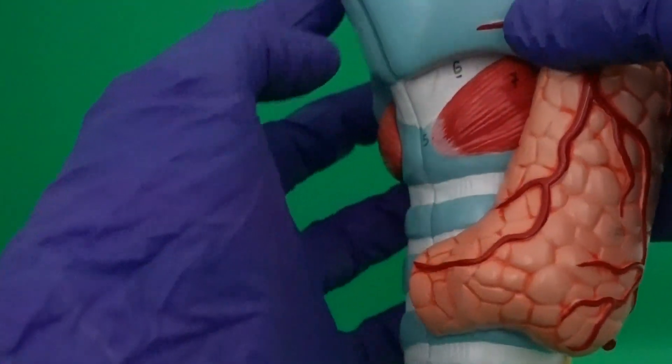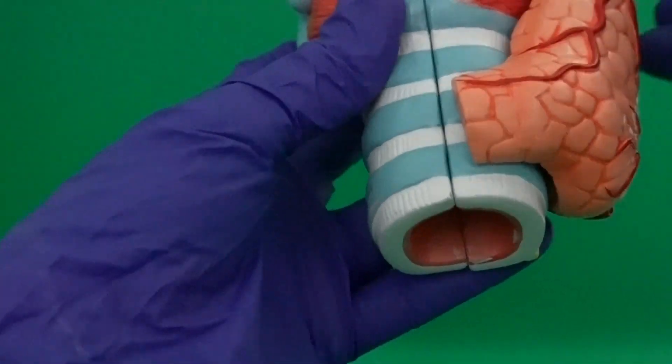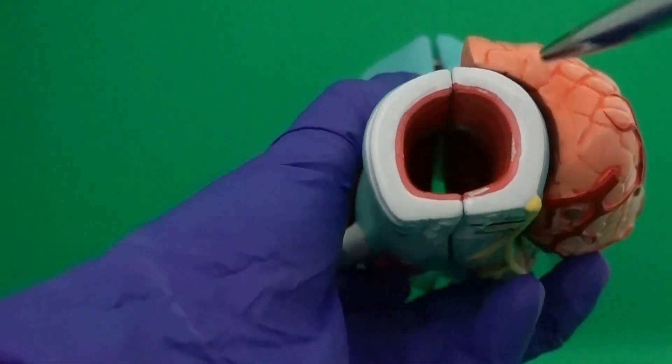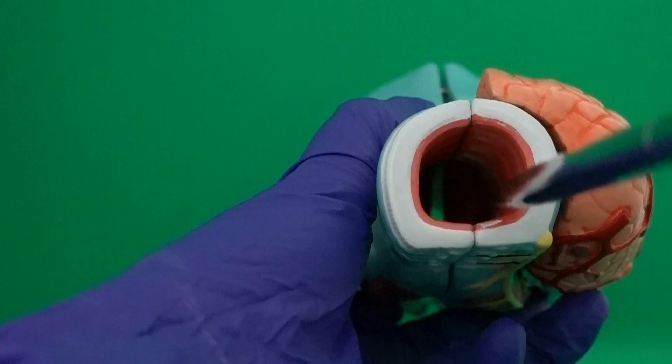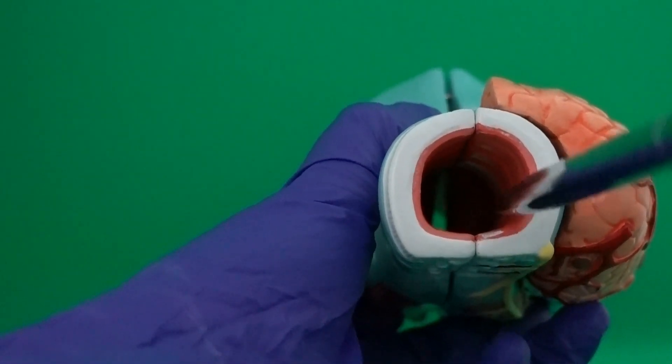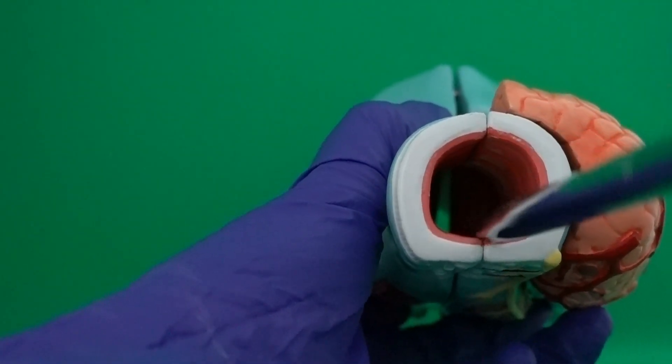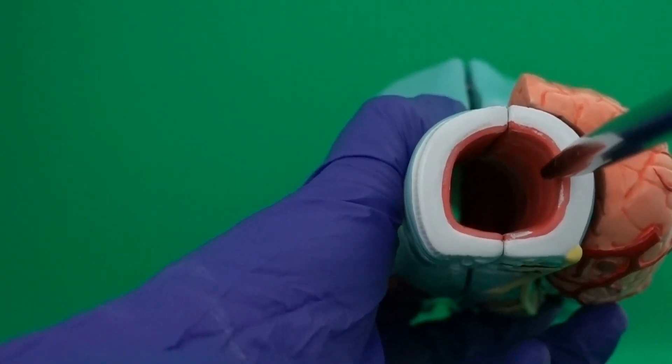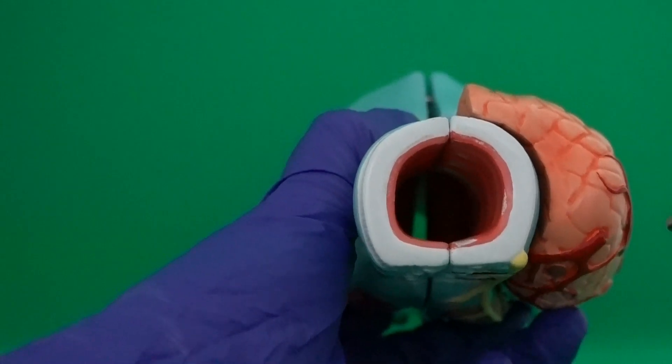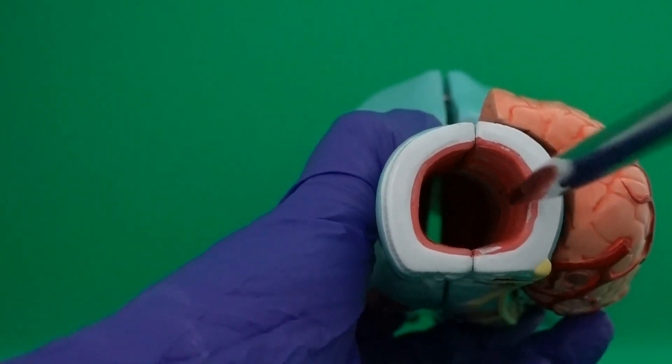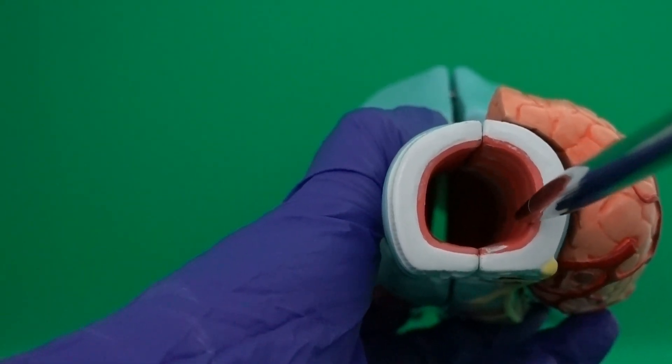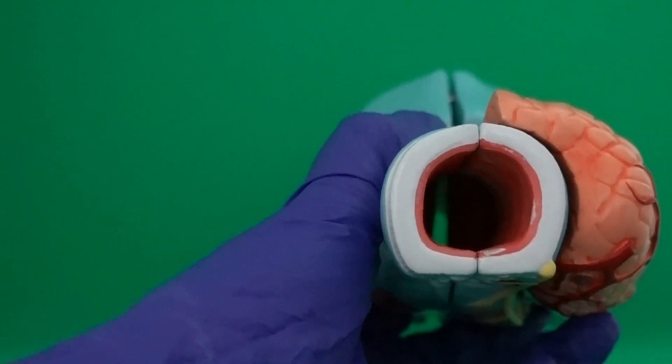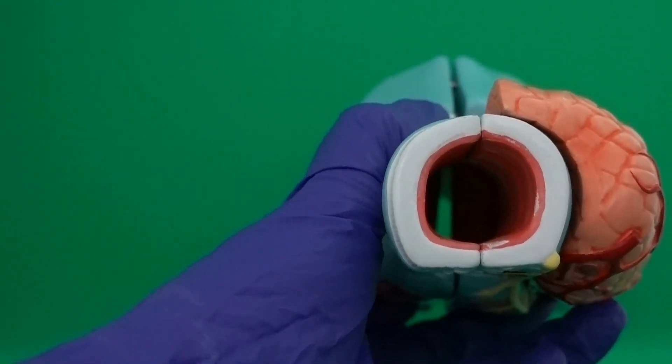In the wall of trachea, we have different layers. For example, the inner layer is the mucous membrane. When we analyze the epithelial tissue of this mucous membrane, we notice that the epithelial tissue is ciliated pseudostratified columnar epithelium. Clearly in the epithelial tissue, we have lots of goblet cells that secrete mucus. We need secretion of mucus for conditioning the air.